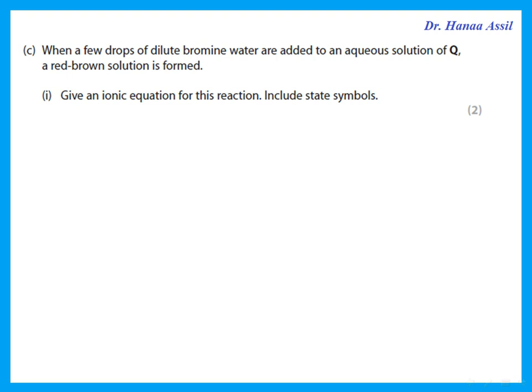When a few drops of dilute bromine water are added to an aqueous solution of Q, which we decided is potassium iodide, a reddish-brown solution is formed. He's asking for an ionic equation including state symbols. So we're reacting bromine aqueous with iodide. Bromine will displace the iodide, so I get a red-brown solution because I end up with iodine aqueous. He wants an ionic equation, so the K⁺ cancels before and after.